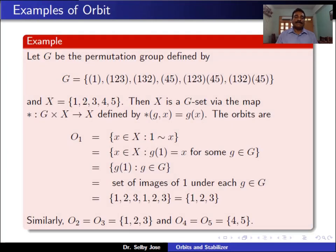Let us see some examples. Let G be a permutation group defined by G equals {the identity permutation, the cycle (1 2 3), the cycle (1 3 2), the transposition (4 5), the product of two cycles (1 2 3)(4 5), and the product of two cycles (1 3 2)(4 5)}. And X is the set {1, 2, 3, 4, 5}.